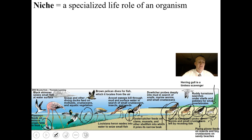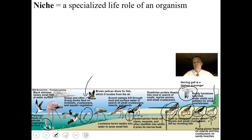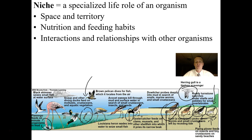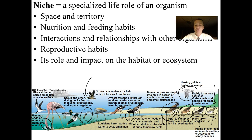Flamingos can filter particles out of the water. Pelicans dive down and scoop up large amounts of fish. Seagulls scavenge. Every creature has its own little life role. The niche includes the space and territory the organism uses, its nutrition and feeding habits, interactions and relationships with other organisms, reproductive habits, and its role and impact on the environment.